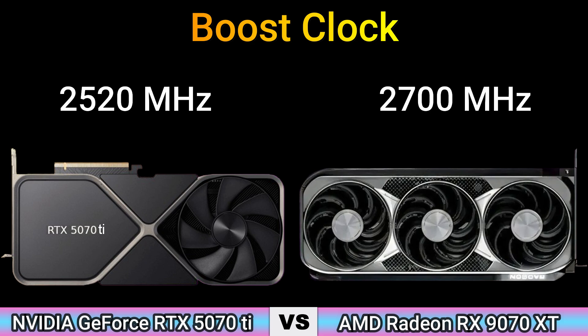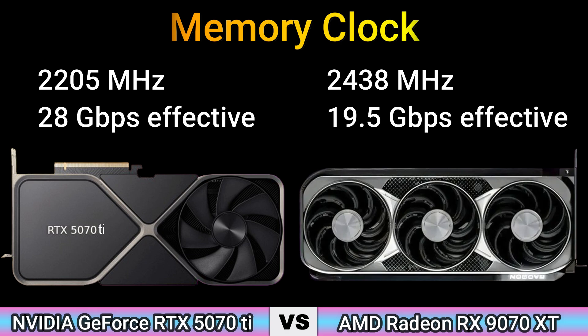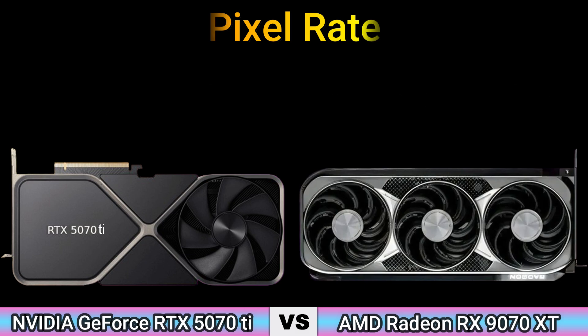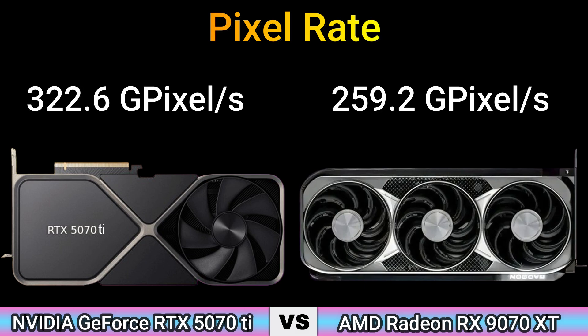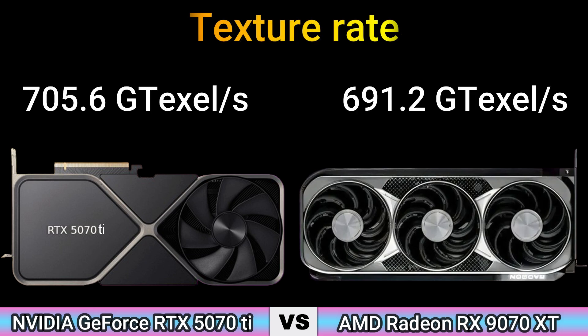Memory clock: 2205 MHz, 28 GB/s effective, and 2438 MHz, 19.5 GB/s effective. Pixel rate: 322.6 GPixel/s and 259.2 GPixel/s. Texture rate: 705.6 GTex/s and 691.2 GTex/s.